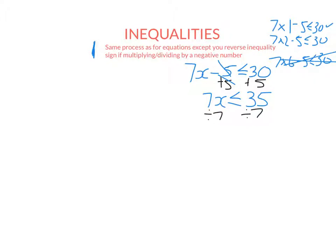So then we undo timesing by 7 by dividing by 7. So 7x divided by 7, 35 divided by 7. Keep the same inequality. So what this means is the solutions to this inequality here are any number where x is less than or equal to 5.